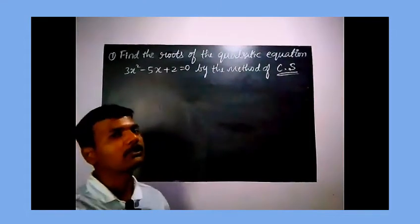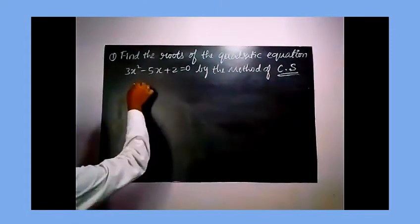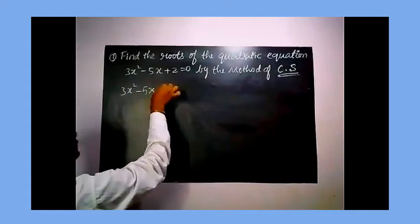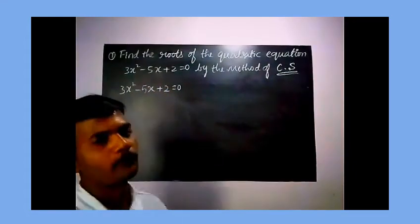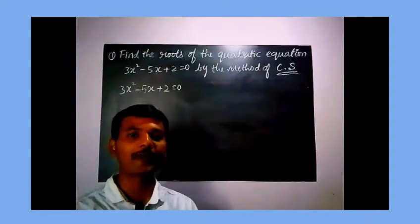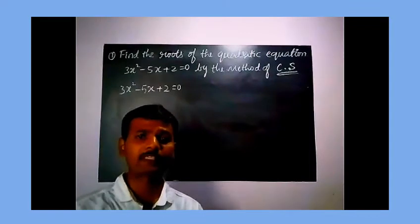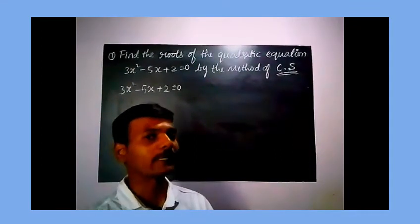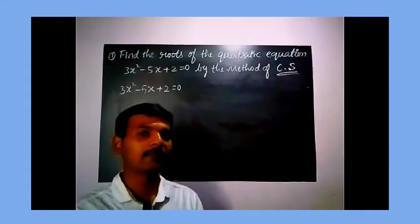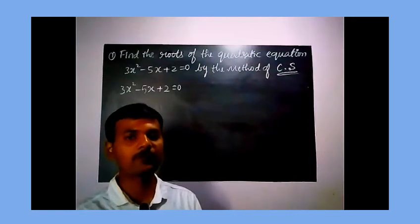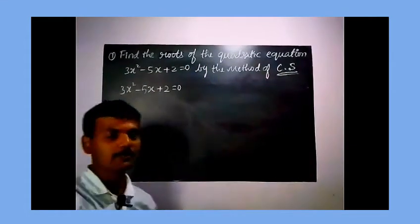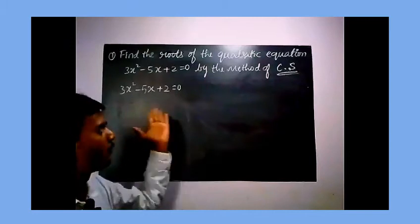Consider the given quadratic equation: 3x squared minus 5x plus 2 equals 0. Firstly, you have to make sure that the coefficient of x squared is 1. If the coefficient of x squared is not 1, you must make it 1 by dividing the whole equation by whatever the coefficient of x squared is. Here, the coefficient of x squared is 3, so let us divide the whole equation by 3.